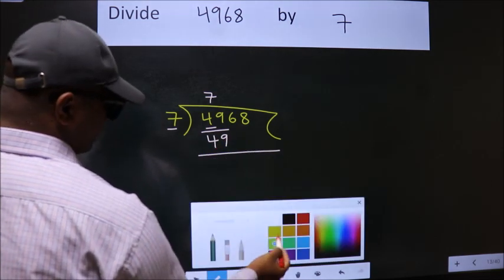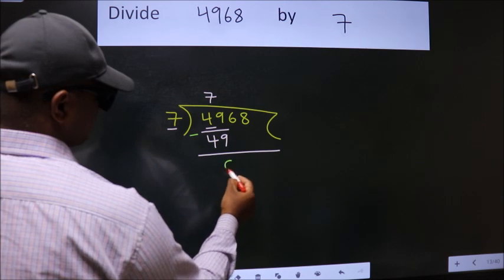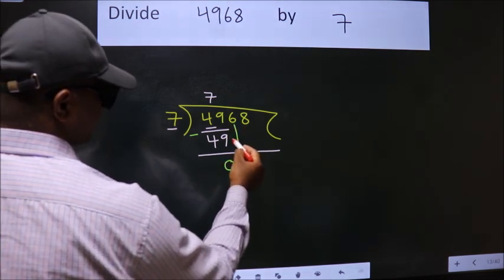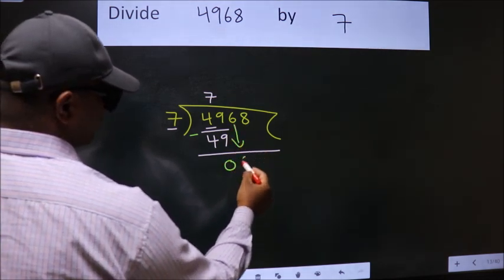Now we should subtract. We get 0. After this, bring down the next number. So, 6 down.